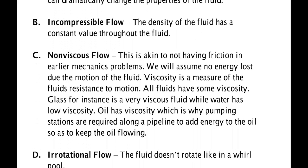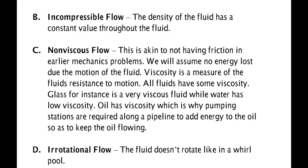The second property is incompressible fluid. We're going to assume that throughout the fluid, everywhere, the density is constant and the same. So if the density is one gram per cubic centimeter at one point, it's still one gram per cubic centimeter later in the fluid. This is different from gases, which can be compressed quite a bit. Most liquids, like blood, can be considered incompressible fluids.